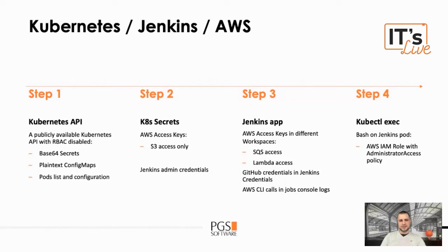On the pods list, I found a Jenkins app running in one or two pods. So using kubectl, I was able to forward port 8080 to my local machine. Then using the Jenkins admin credentials, I logged into that instance. And there I found many projects with different workspaces, and in these workspaces there were config files with plain text credentials — different credentials than the ones in the Kubernetes API.